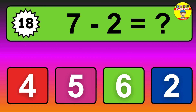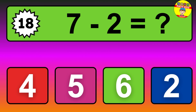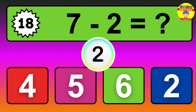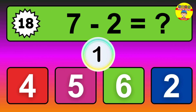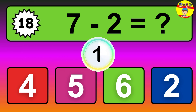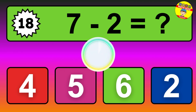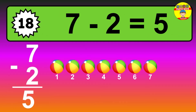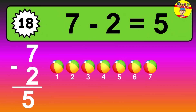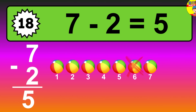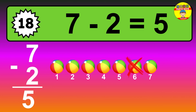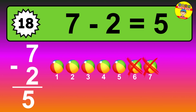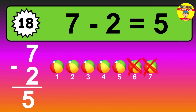Question eighteen: seven minus two equals what? The answer is seven minus two is five. Let's count it: one, two, three, four, five.